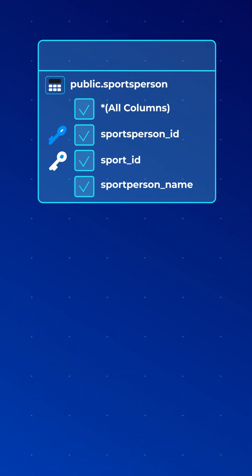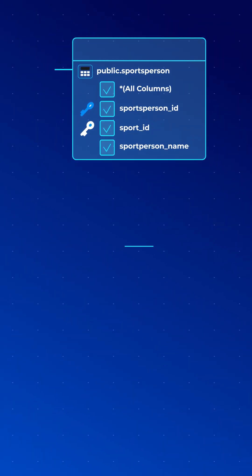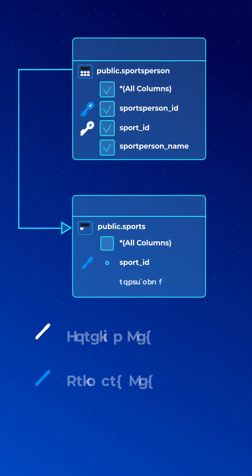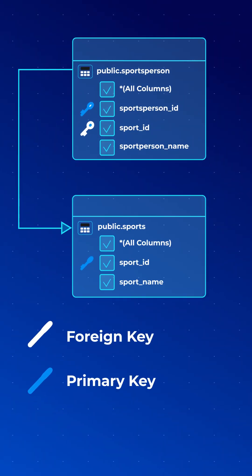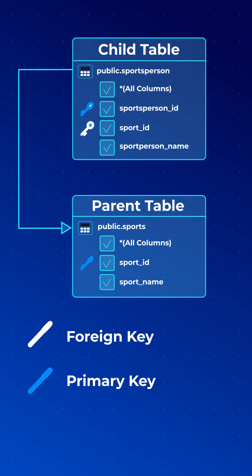In a relational database, a foreign key is a column or combination of columns in one table that refer to the primary key in another table. The table with the foreign key is called the child table, and the table with the primary key is called the referenced or parent table.